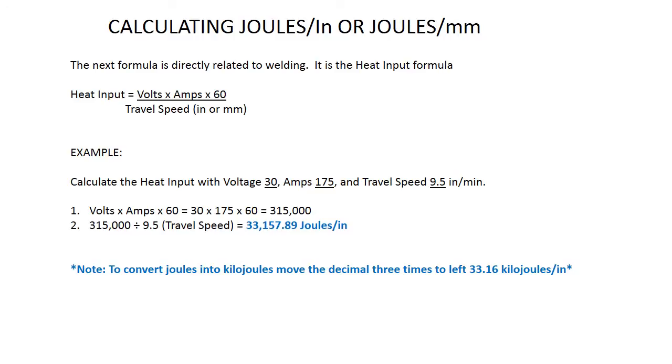...a voltage of 30, amperage of 175, and travel speed of 9.5 inches per minute. So, volts times amps times 60 equals 30 times 175 times 60, which equals 315,000. Then...